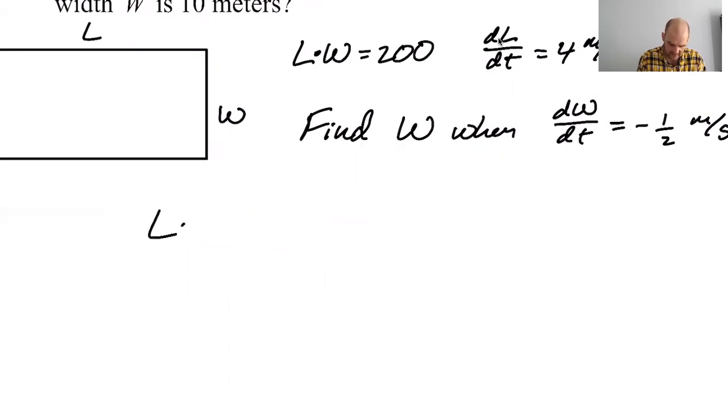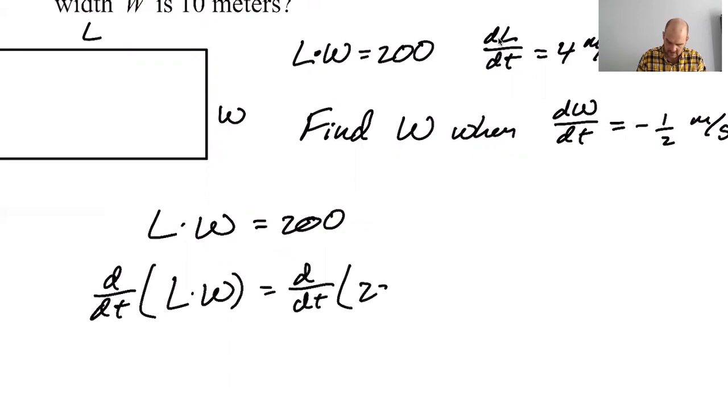I'm going to take L times W equals 200 and find the derivative with respect to time of that. I mean, which is, it's equivalent to what I was going to do. But I think this is better.